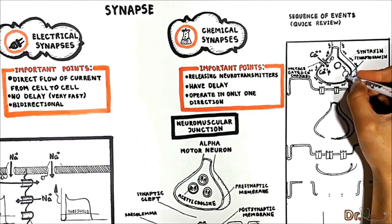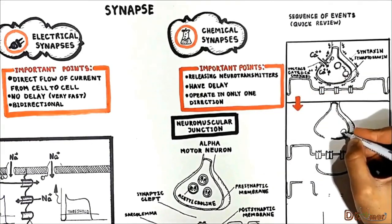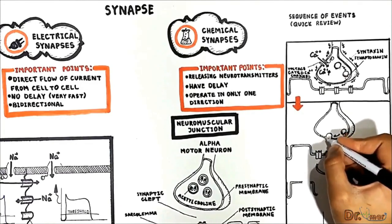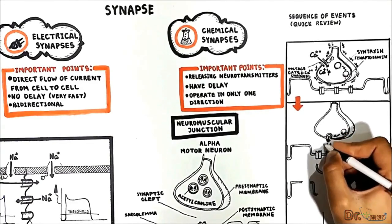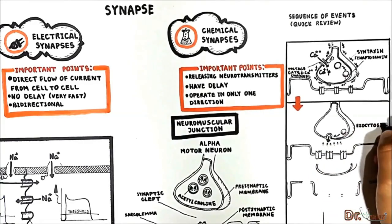So syntaxin and synaptobrevin attach to each other. When both proteins are activated and meet together the synaptic vesicles fuse with the plasma membrane and empty their acetylcholine into the synaptic cleft by a process called exocytosis.